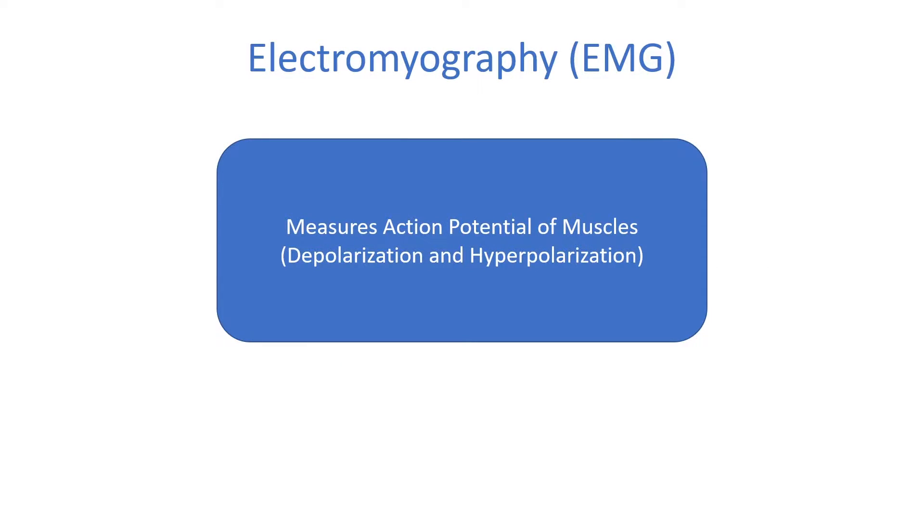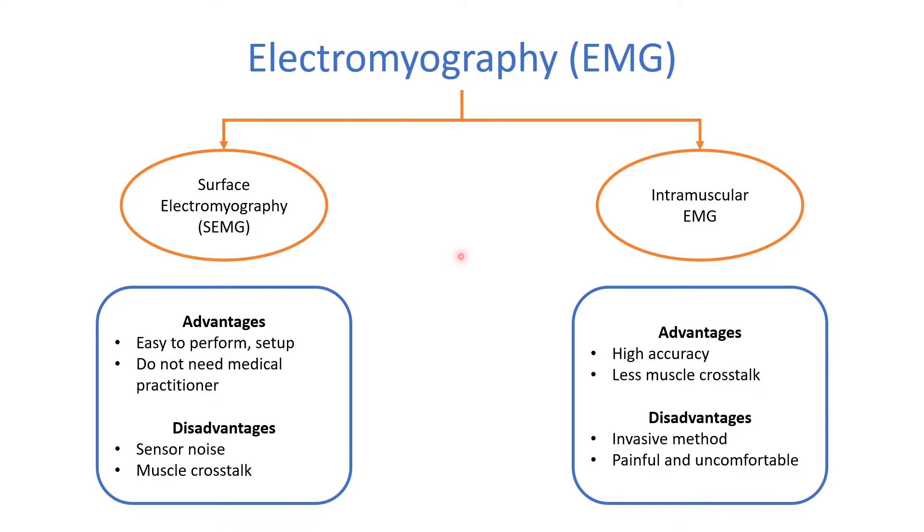Alright, so what is electromyography or EMG? EMG is a biomechanical process and it is used to measure the activity of a muscle. This is done by placing electrodes in line with the muscle you would want to analyze and then measuring the electrical signals sent from the nervous system to actuate that particular muscle. But if you put it formally, EMG measures the action potential of muscles which are its levels of depolarization and hyperpolarization.